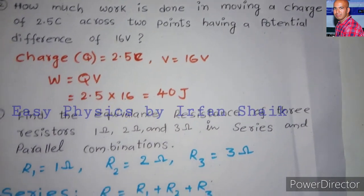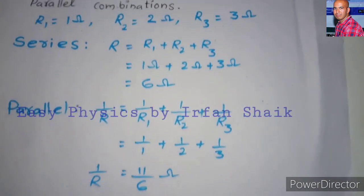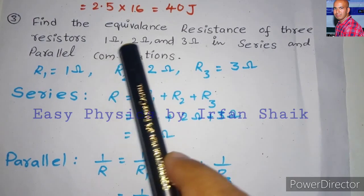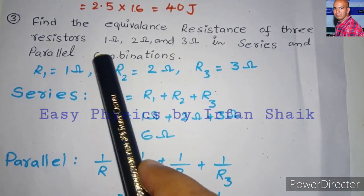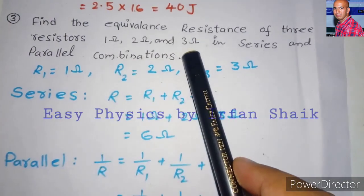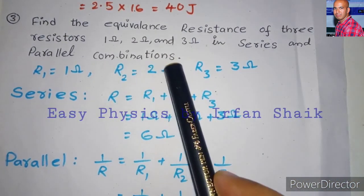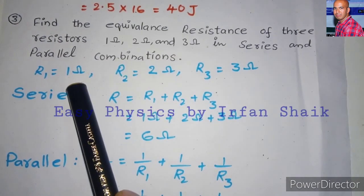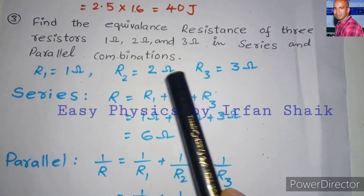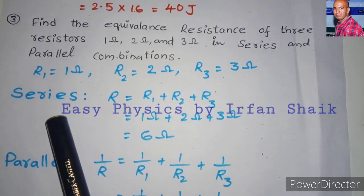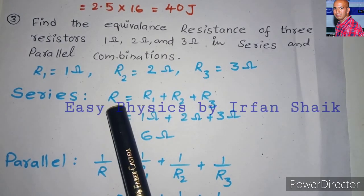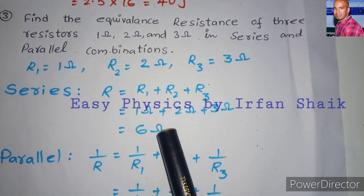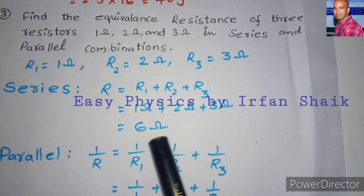Next move to the third problem. Find the equivalent resistance of three resistors 1 ohm, 2 ohm, and 3 ohms in series and parallel combinations. The values are R1 equals 1 ohm, R2 equals 2 ohms, R3 equals 3 ohms. When these three are connected in series, the equivalent resistance R equals R1 plus R2 plus R3. Adding all three values, we get 6 ohms.